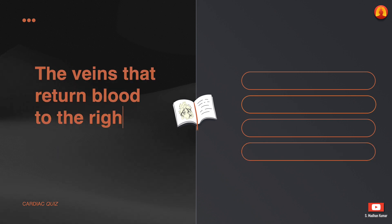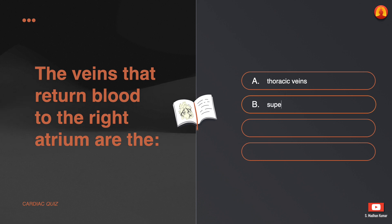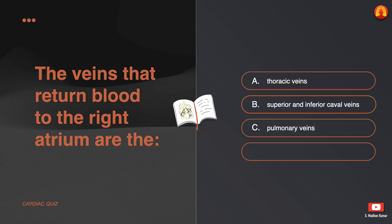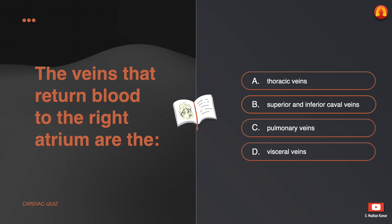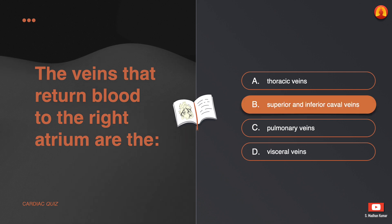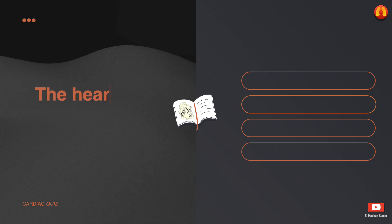The veins that return blood to the right atrium are the: A. Thoracic veins. B. Superior and inferior caval veins. C. Pulmonary veins. D. Visceral veins. The correct answer is: superior and inferior caval veins.